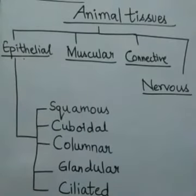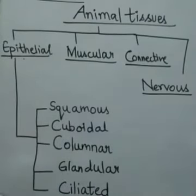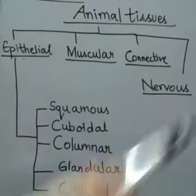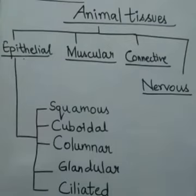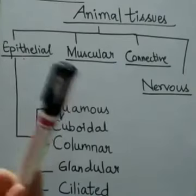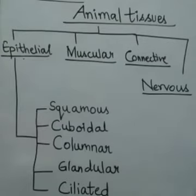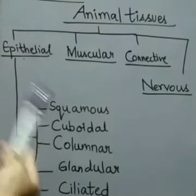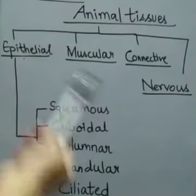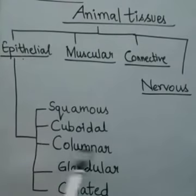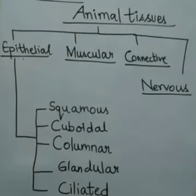Epithelial tissue covers the outermost covering, just like the outermost covering of a packet or any box. This tissue protects our body from the environment, like from heat, cold, and germs, and it also separates internal organs. Epithelial tissues are found in the lining of the mouth, blood vessels, and kidney tubules. They are further classified depending upon the shape and function of the cells.